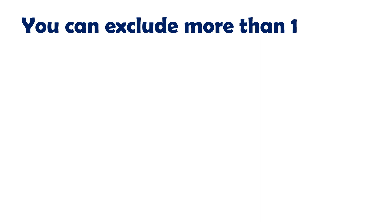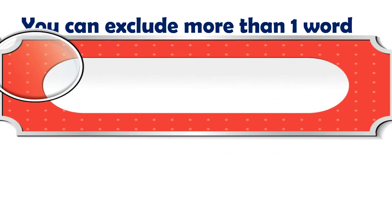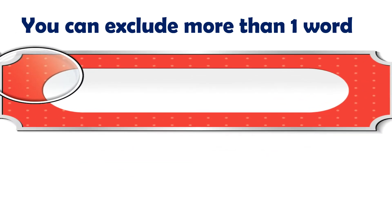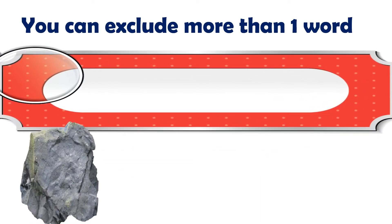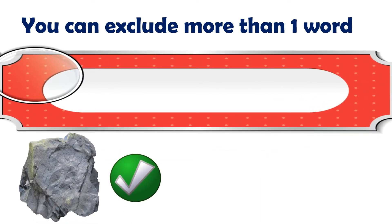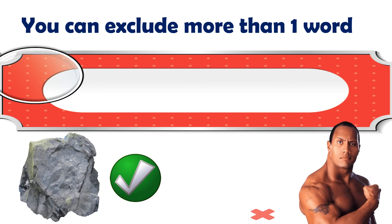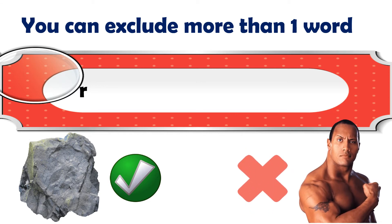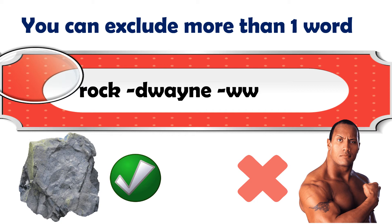You can also put more than one word to exclude. So for the earlier example, to search for rock the stone and not rock the actor, you can type: rock, space, dash Dwayne, space dash WWE, space dash movie.